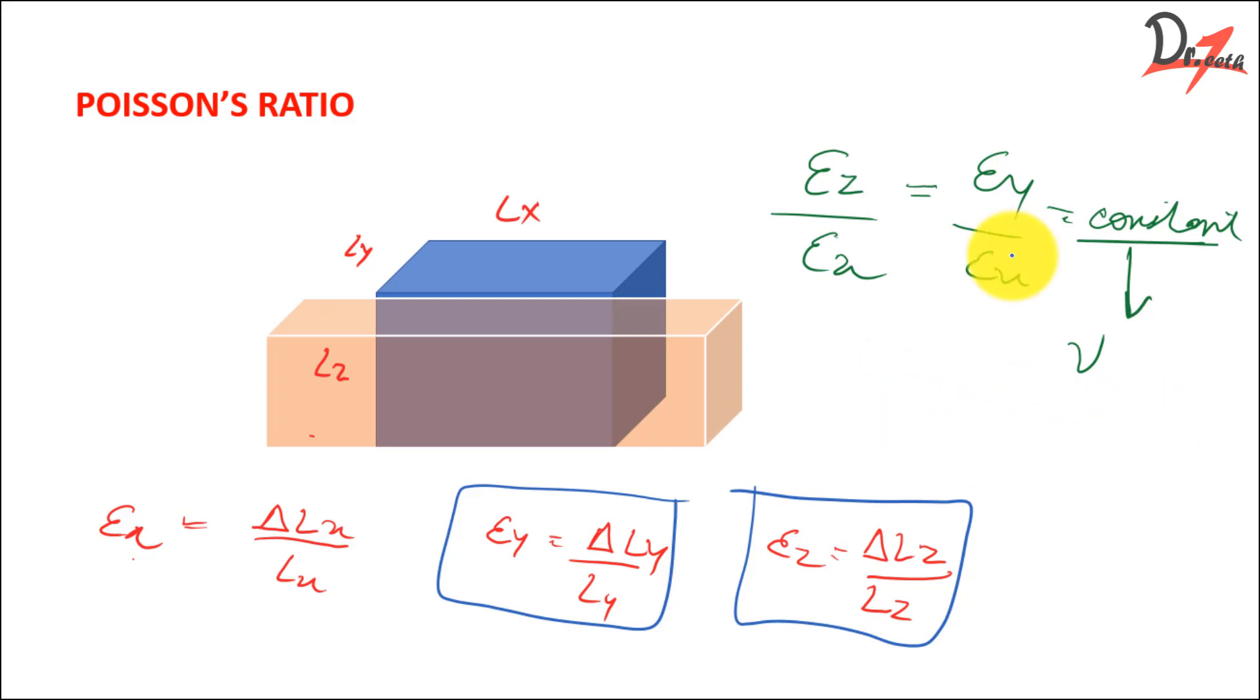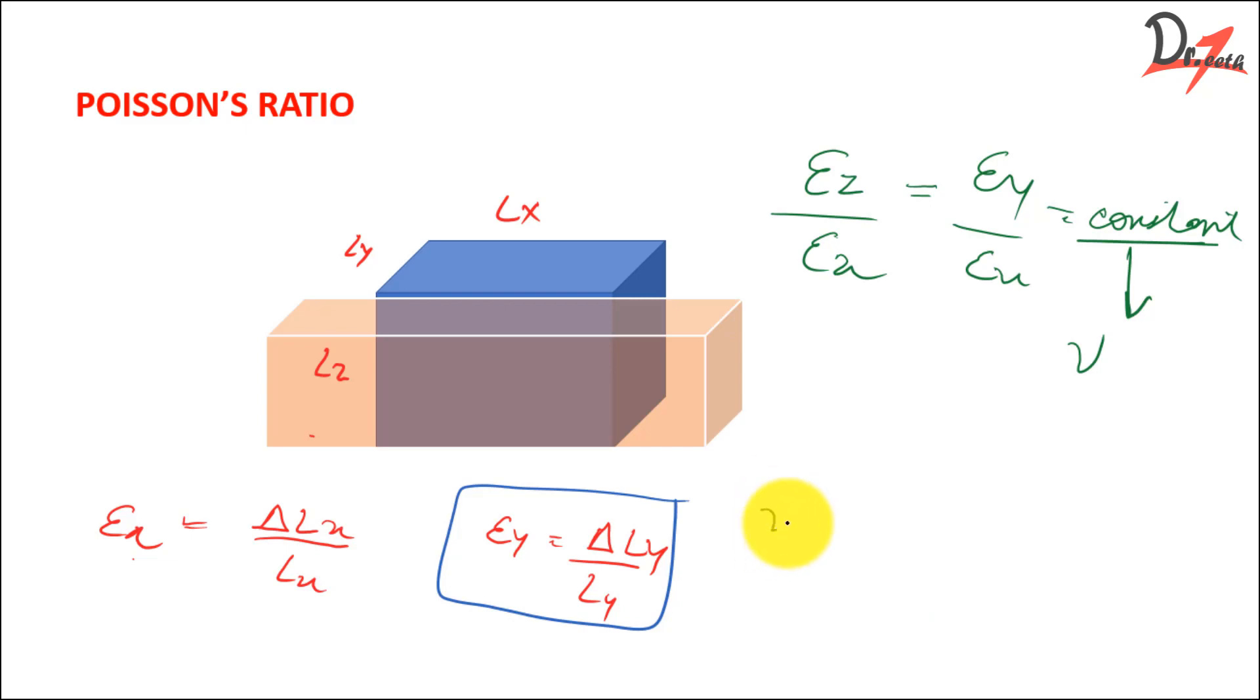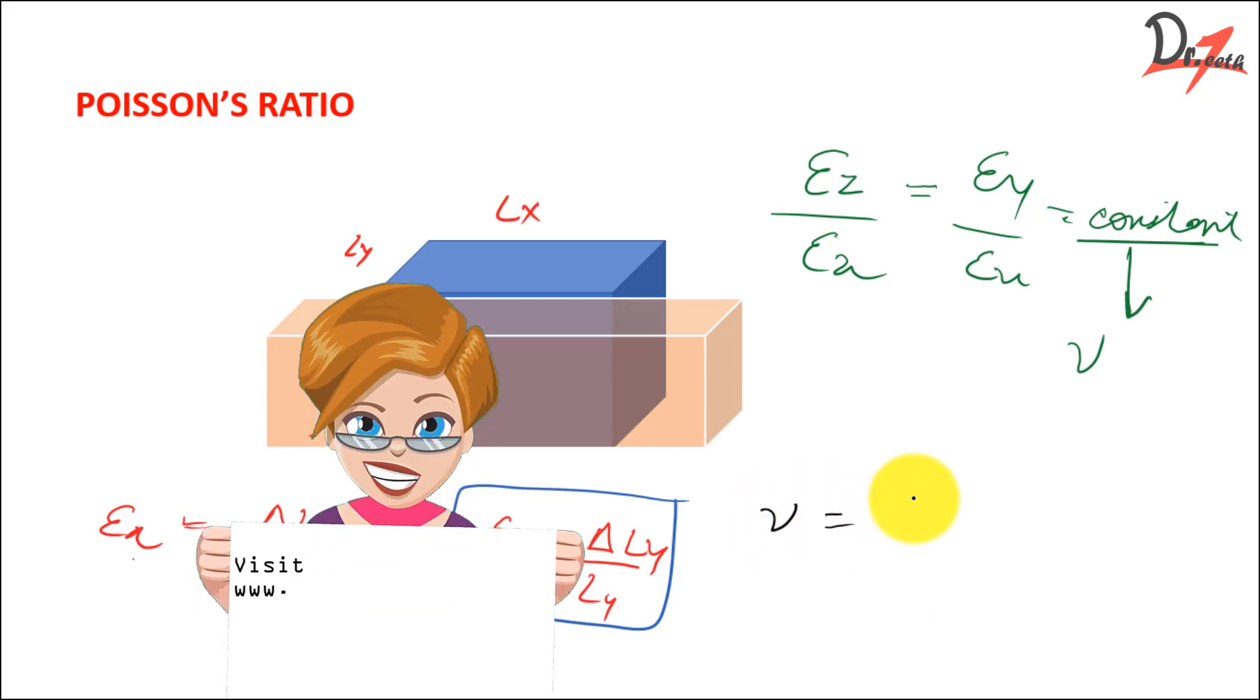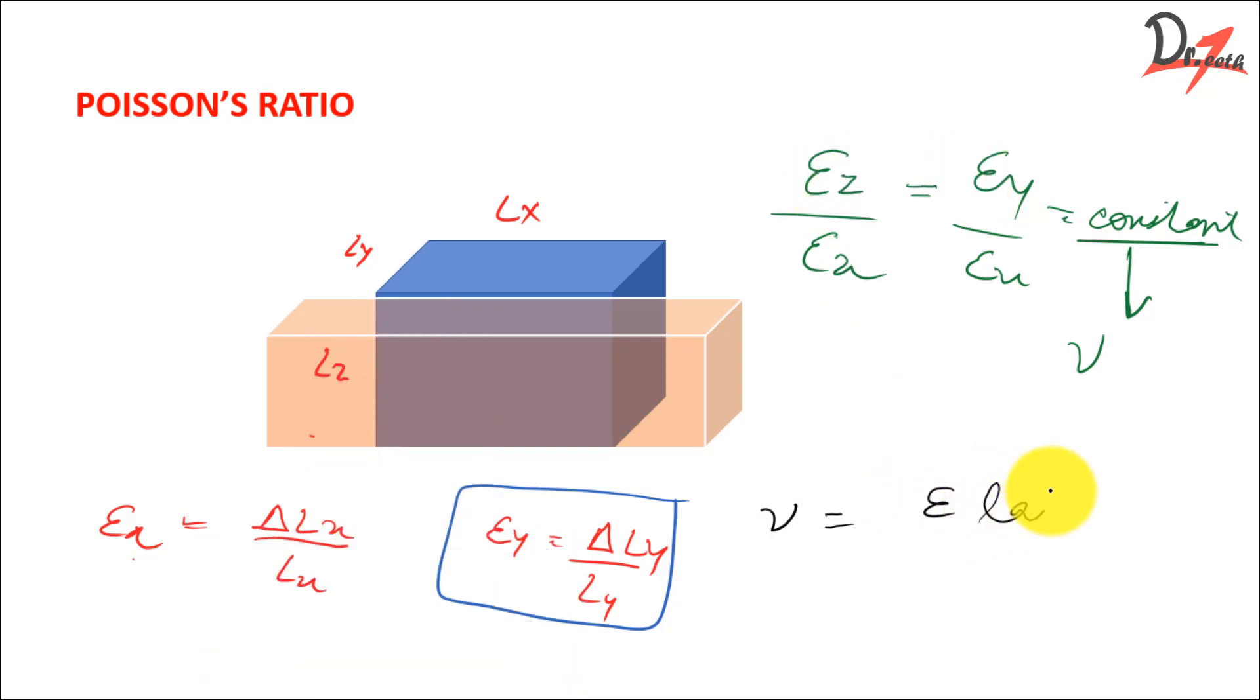How do we better write it? Let me erase all these things so that we have a space here. So the Poisson's ratio mu is equal to epsilon. What was this? This was the lateral, right? And what was this? This was the longitudinal, where the force was being applied in the x-axis. This is the longitudinal.